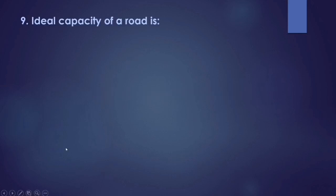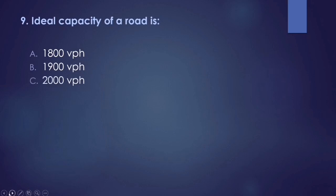So, let's see — 2,000 ang sagot dito. A — 1,800. B — 1,900. C — 2,000. D — 2,100. So, ang sagot dito, guys, is 2,000 VPH. So, tandaan nyo na yung ideal capacity of the road — kahit saan yan.